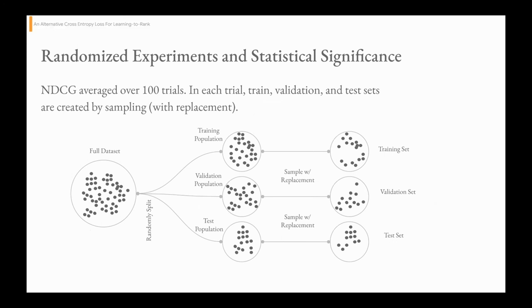Just a short note on experiments and how we measure statistical significance. Given a full dataset, we split that randomly into training, validation, and test populations, and then we sample with replacement to form training, validation, and test sets in each round. We train models on the training and validation sets and evaluate on the test set. We repeat this procedure 100 times.